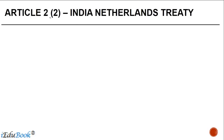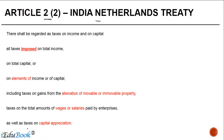Now when I go to Article 2.2, what does it specify? If you remember, Article 2.1 of the India-Netherlands treaty said that it applies to taxes on income and capital. What shall be regarded as taxes on income and on capital is provided by Article 2.2. There shall be regarded as taxes on income and on capital all taxes imposed on total income and on total capital.